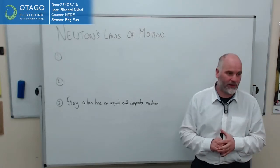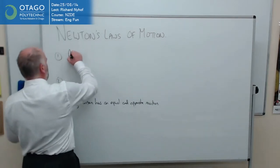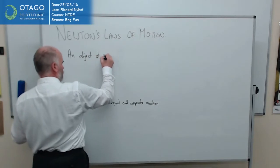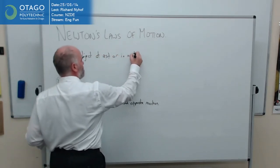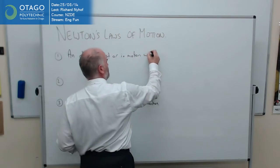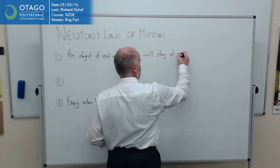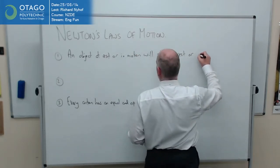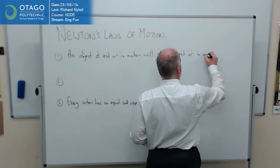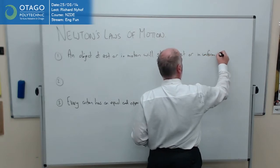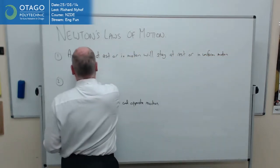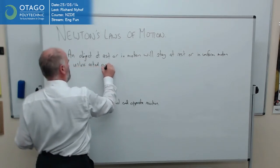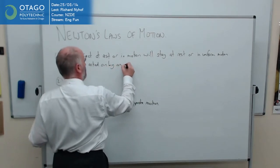This is number one. So an object at rest or in motion will stay at rest or in uniform motion. Yeah, we'll go for uniform.